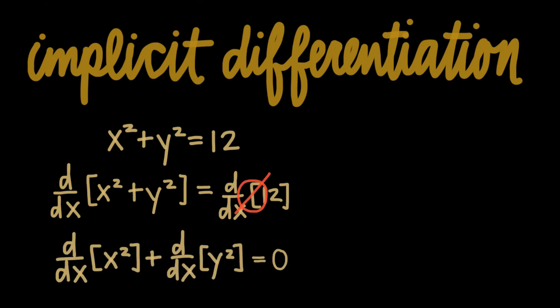On the left side, we'll need to take the derivative of both components, x squared and y squared. The x squared component is easy. We just use power rule to find that the derivative of x squared is 2x.